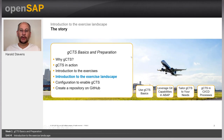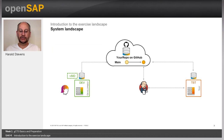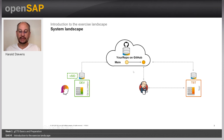Hello and welcome to the OpenSAP course DevOps for ABAP with GCTS in SAP S/4HANA. Week 1, GCTS Basics and Preparation, Unit 4: Introduction to the exercise landscape. My name is Harald Stevens and I'm a product manager at SAP. In this unit we'll briefly show how our exercise landscape looks and how you access the different tools. We have two S/4HANA systems — DEV and TEST — connected for the GCTS exercises to a central GitHub repository. In the last week we will additionally use Jenkins as a CI server.